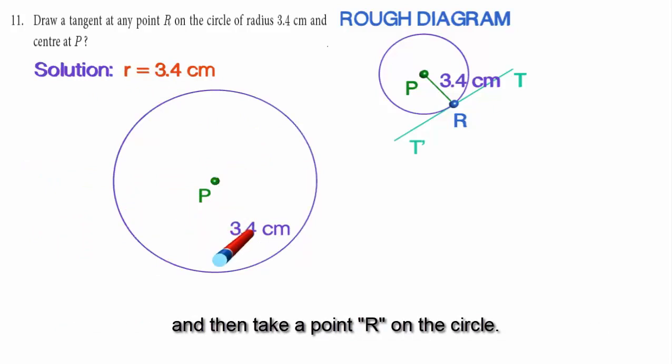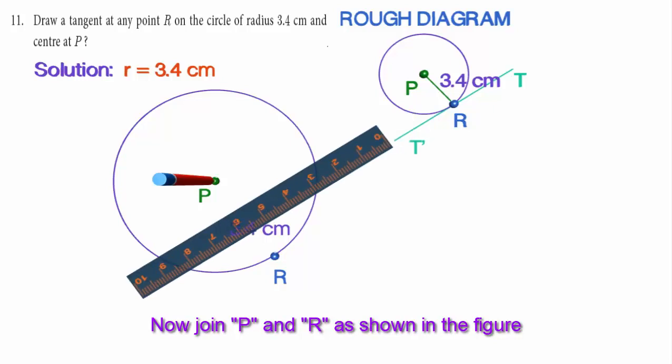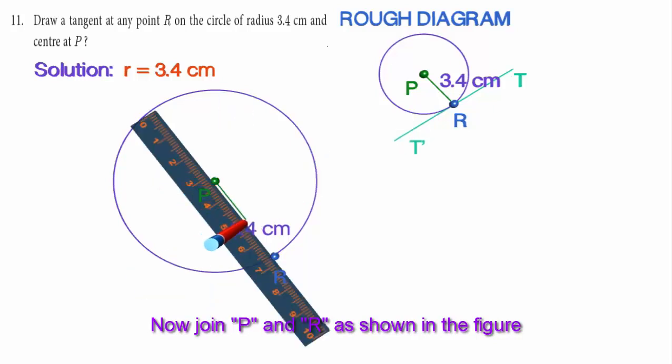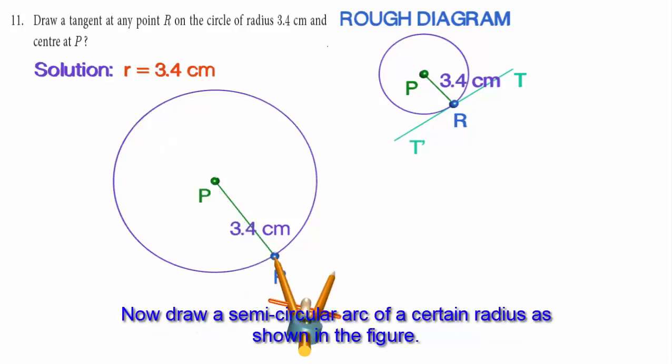And then, take any point R on the circle. Now, draw a semicircular arc of a certain radius as shown in the figure.